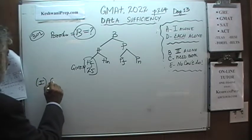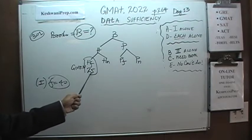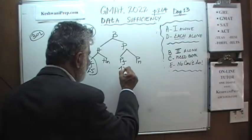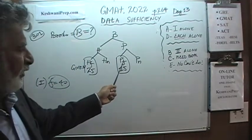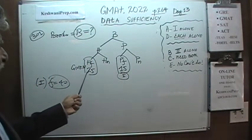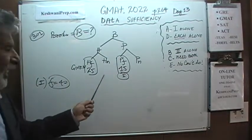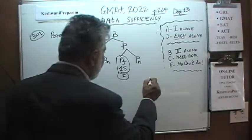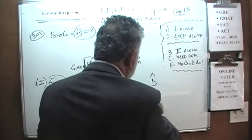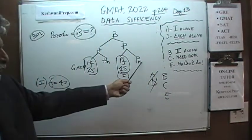The first statement tells us we have a total of 40 fiction books. If there are 40 fiction books total and we know 25 are hardcover fiction, then we must have 15 paperback fiction books. But simply knowing how many fiction books we have does not enable us to figure out the total, because we don't know how many non-fiction books we have. The first statement by itself is not enough.